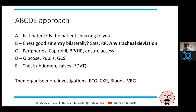For breathing: check the chest, ensure you're getting air in bilaterally. Check the sats - 91% on room air. Respiratory rate is 25. Crucially, check for tracheal deviation because we're worried about tension pneumothorax - if it is tension, you may have tracheal deviation. For circulation: check peripheries, cap refill, blood pressure, heart rate, ensure IV access. Check blood glucose, pupils, and GCS - GCS 15, pupils equal and reactive, glucose 7. Check the abdomen and calves for DVT. Then organise ECG, chest X-ray, bloods, and ABG.